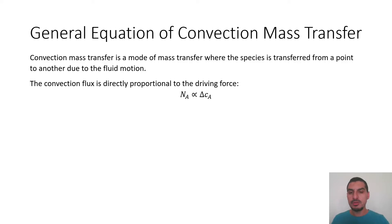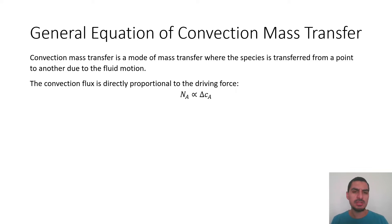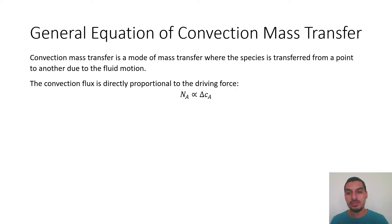Hello everybody. Now we are going to talk about the equation that describes mass transfer by convection. The equation is pretty simple: the flux is directly proportional to the concentration difference between the two points where convection is taking place. So Na is directly proportional to ΔCa.